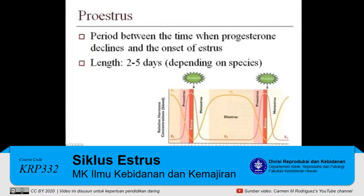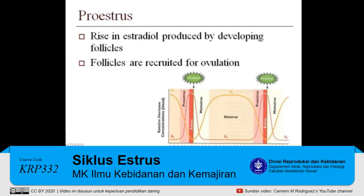Proestrus is the period between the time the corpus luteum regresses and the onset of estrus. Depending on the species, an animal can be in proestrus anywhere from two to five days. During proestrus, the developing follicles are secreting estradiol and a select number of these follicles are then recruited for ovulation.